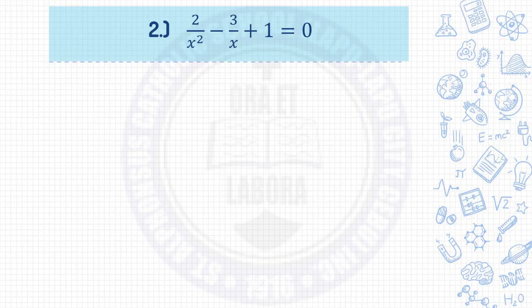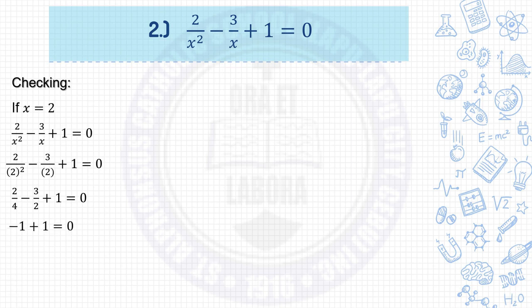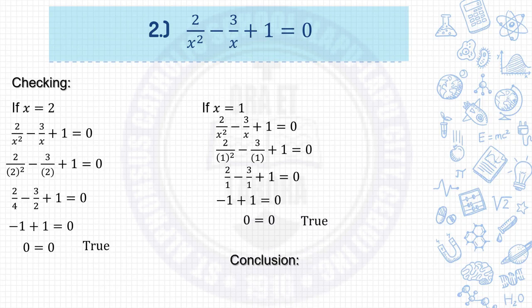Do the checking and conclusion. If x equals 2, substitute into the given: 2 over 2 squared minus 3 over 2 plus 1 equals 0. That gives 2 over 4 minus 3 halves, which equals negative 1, and negative 1 plus 1 equals 0. So 0 equals 0, true. If x equals 1, substitute: 2 over 1 squared minus 3 over 1 plus 1 equals 0. That gives 2 minus 3 equals negative 1, and negative 1 plus 1 equals 0. So 0 equals 0, true. Conclusion: therefore, the values of x are 2 and 1.